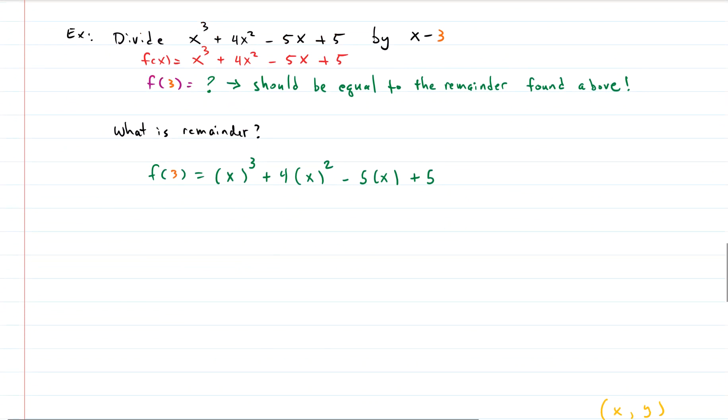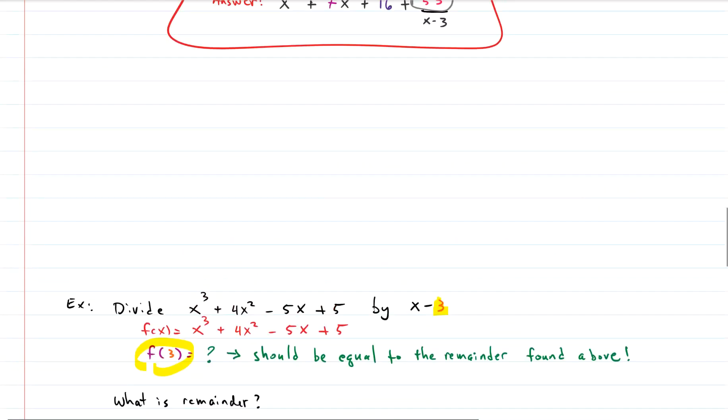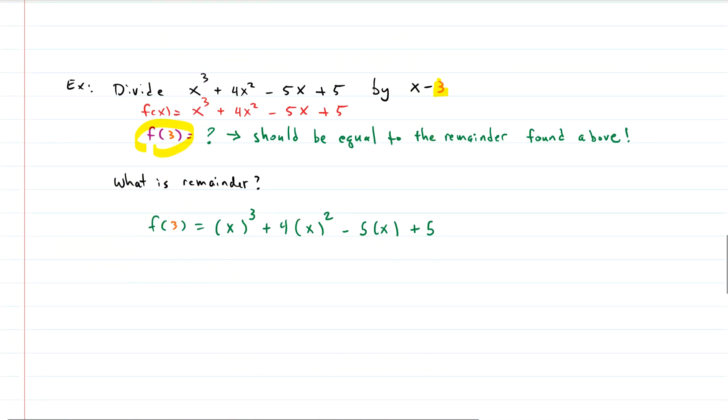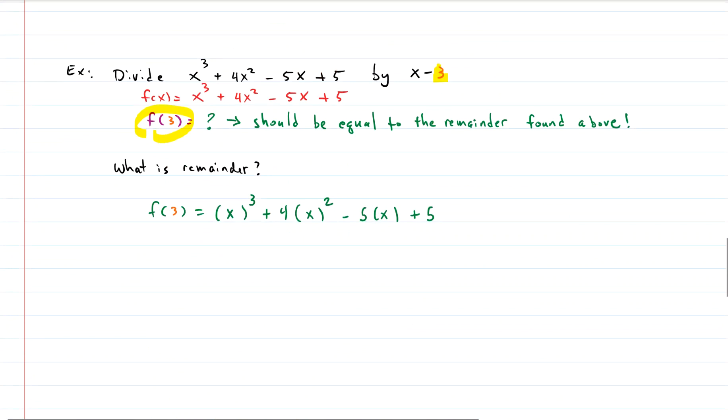So our theorem, the remainder theorem, says that this function evaluation is what? F of 3, which is the c, right? Should be what? It should be the same thing as the remainder. What was the remainder? Did you already forget? The remainder was 53. 53. That was the remainder. So f of 3 should be equal to 53. Is it? It's the million dollar question.